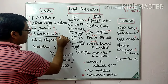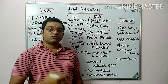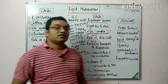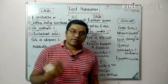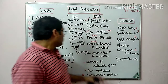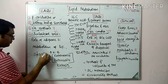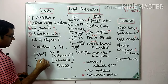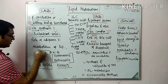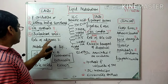Cholesterol synthesis has five steps. The precursor molecule is acetyl-CoA, which is converted into HMG-CoA, then into mevalonate. There is generation of isoprene units; condensation of isoprene units causes synthesis of squalene, and squalene is converted into cholesterol. In cholesterol degradation, cholesterol is utilized for steroid hormone synthesis, synthesis of vitamin D, and synthesis of bile acids. HMG-CoA reductase is the main enzyme in cholesterol synthesis.